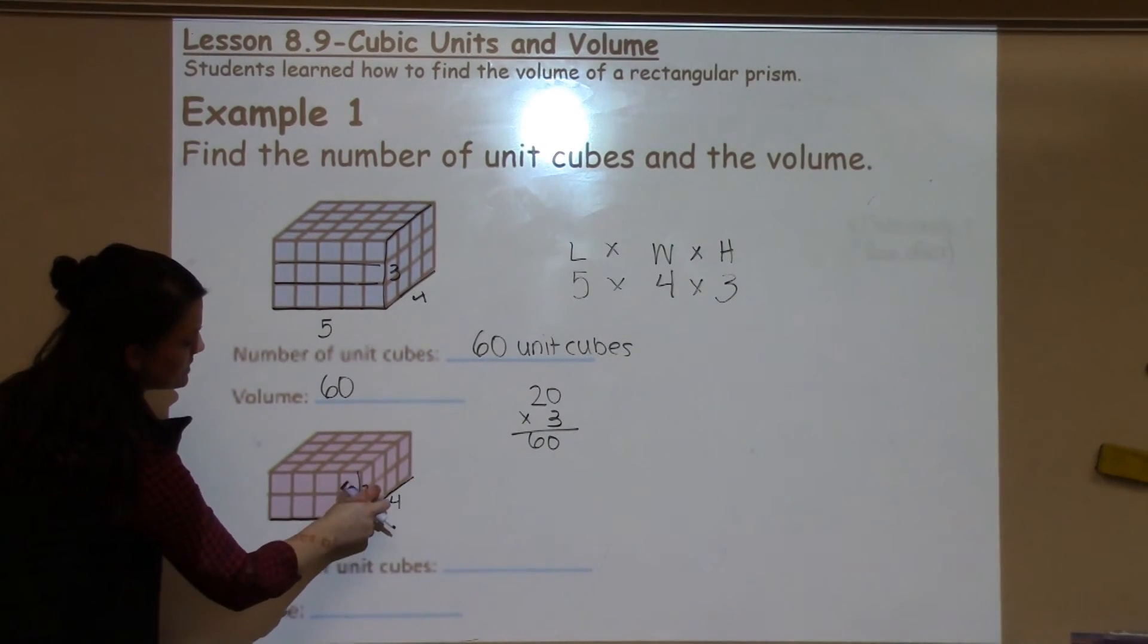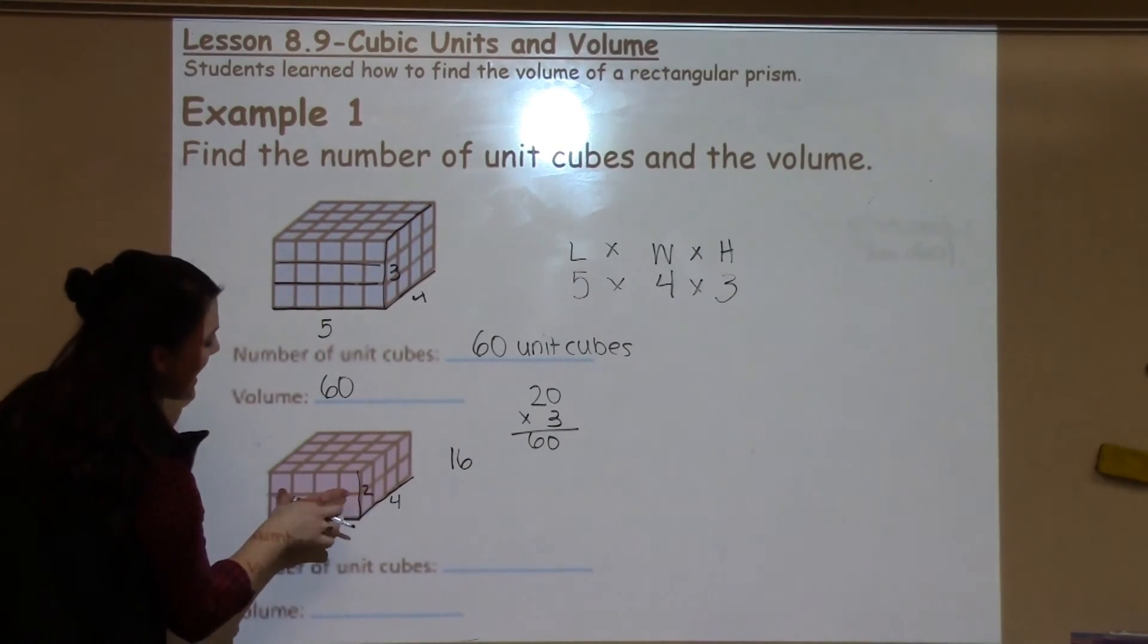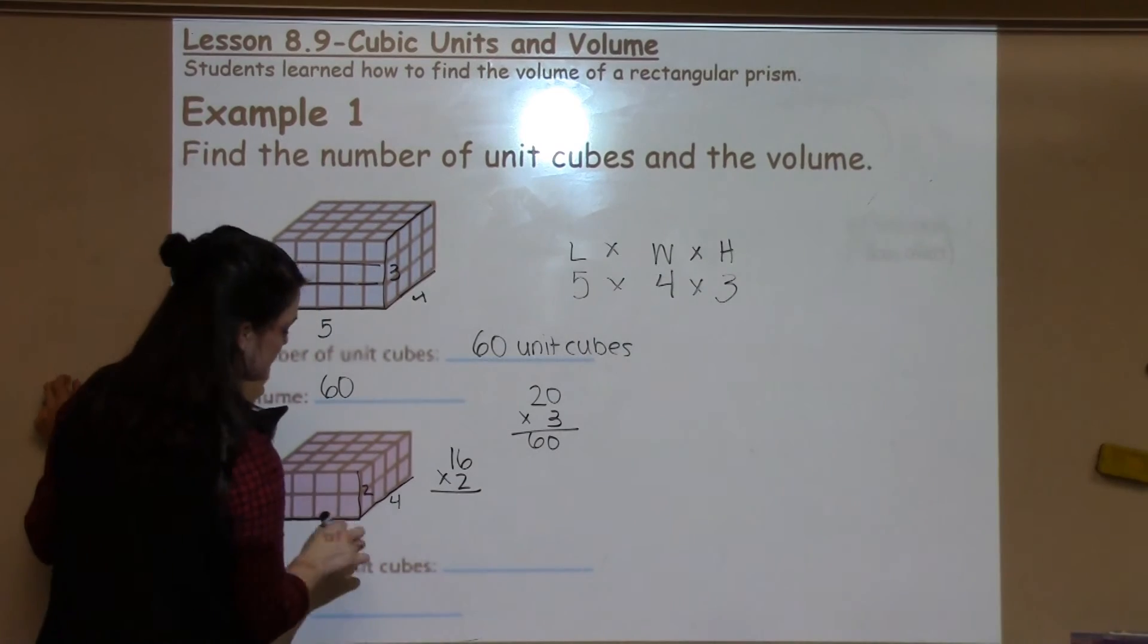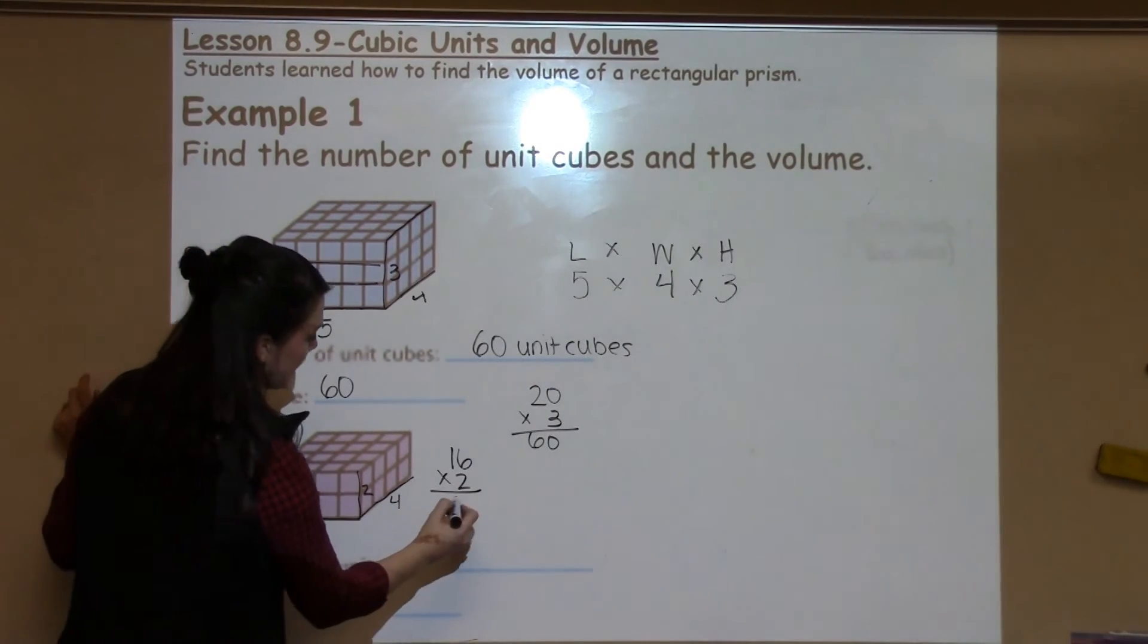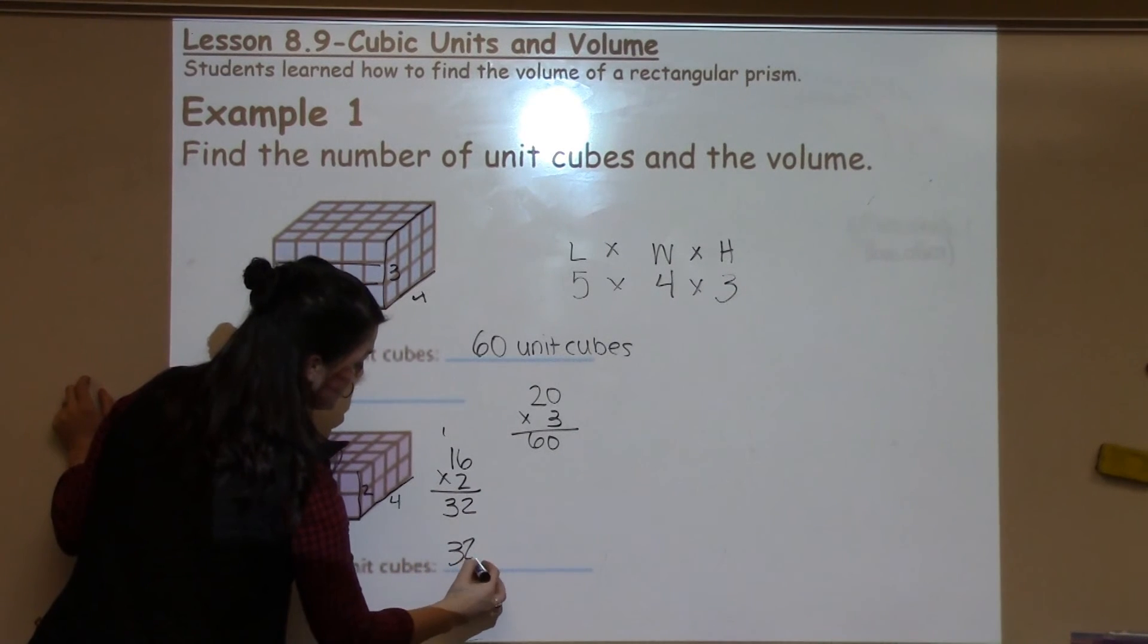So I know that I've got 1, 2, 3, 4 times 1, 2, 3, 4 - so 4 times 4 is 16 - and then I have 2 chunks of that so I'm going to double it, now they're stacked on top of each other to make that height, to get me a final answer of 32 unit cubes.